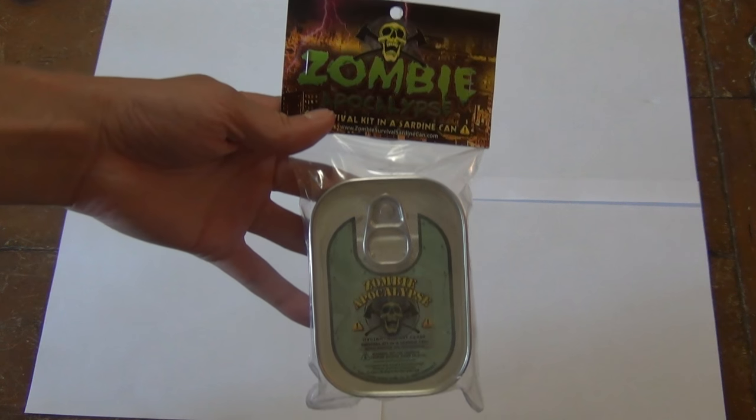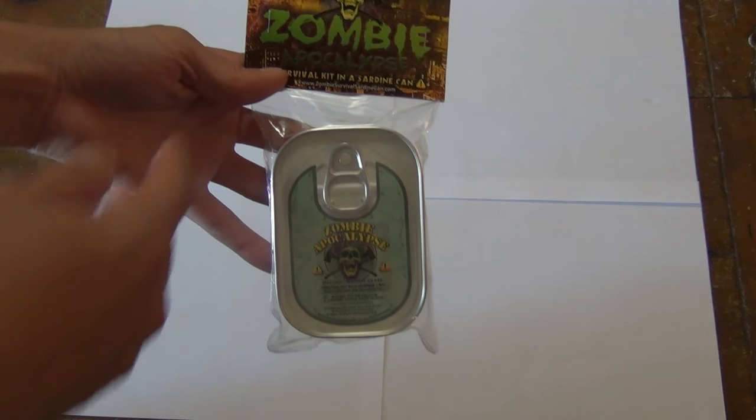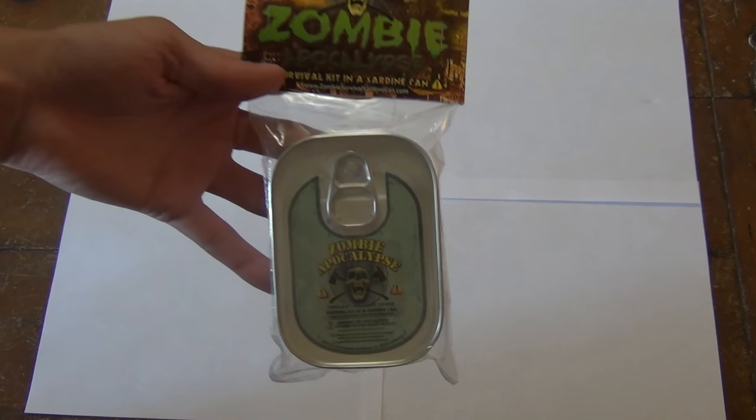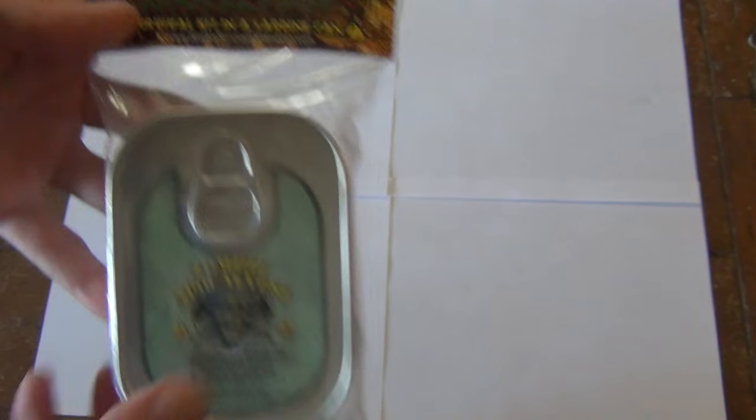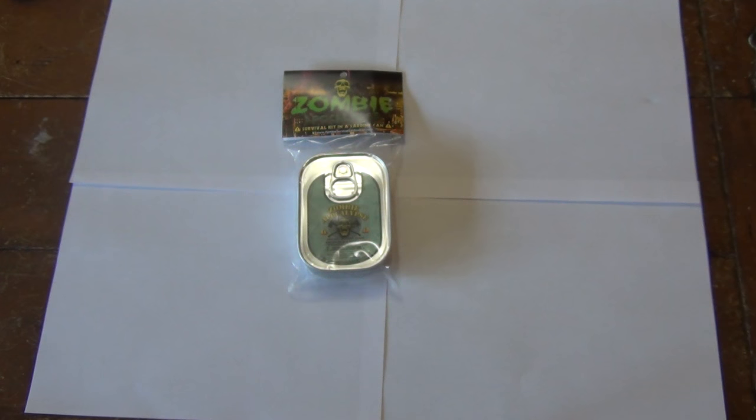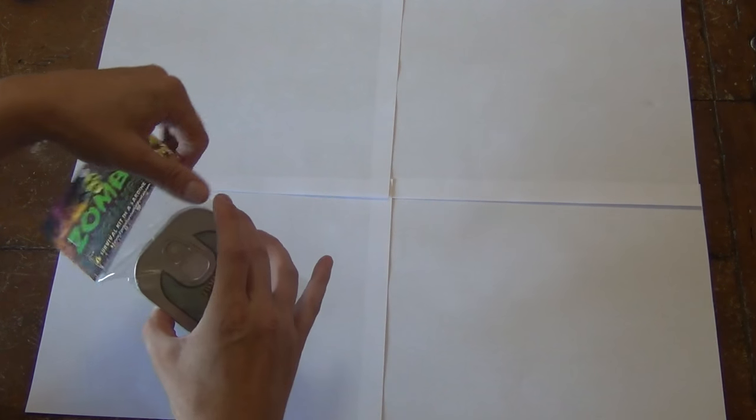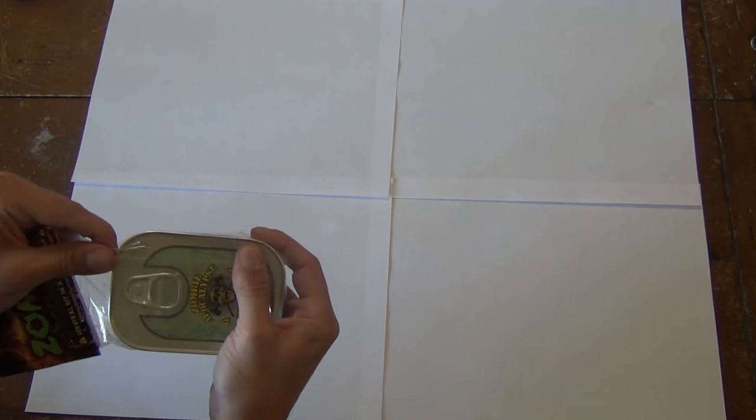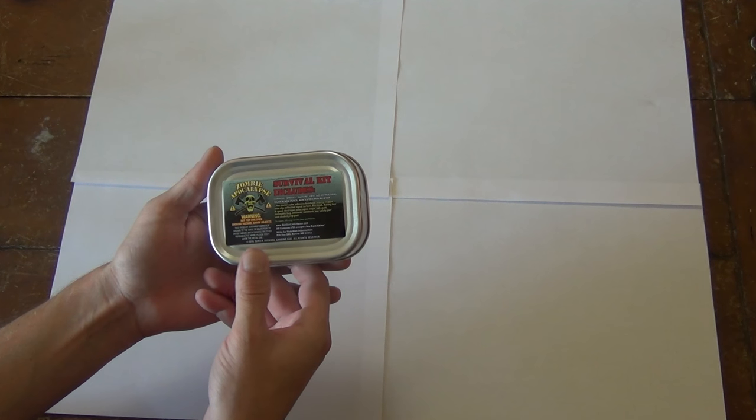Alright guys, I got this little product to open up and test out and see if it's any good. This is the Zombie Apocalypse Survival Kit in a sardine can. We're going to go ahead and open it up and see what's actually in it, see if it would actually help you in a bug out or zombie apocalypse type situation. We'll get it out of the plastic wrap here. And the can itself is just basically a little sardine can.